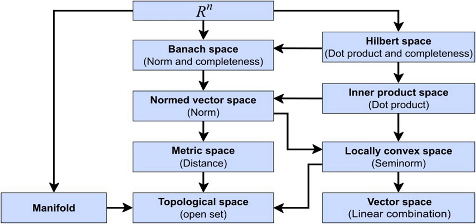On the second level, one takes into account answers to especially important questions among those that make sense according to the first level. On the third level, one takes into account answers to all possible questions. For example, the upper-level classification distinguishes between Euclidean and projective spaces, since the distance between two points is defined in Euclidean spaces but undefined in projective spaces. The question 'what is the sum of the three angles of a triangle?' makes sense in a Euclidean space but not in a projective space. In a non-Euclidean space the question makes sense but is answered differently — which is not an upper-level distinction.